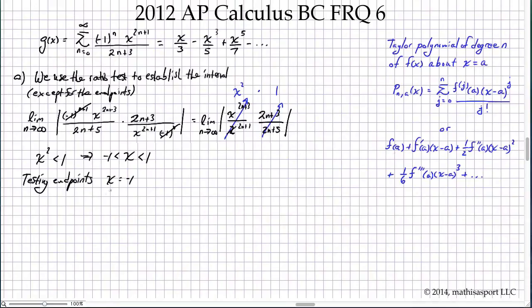Let's start with x equals negative 1. I substitute negative 1 in for x back into the formula and see what sort of series I have. I have this infinite series, n equals 0 to infinity of negative 1 to the n, negative 1 to the 2n+1, and that's divided by 2n+3.